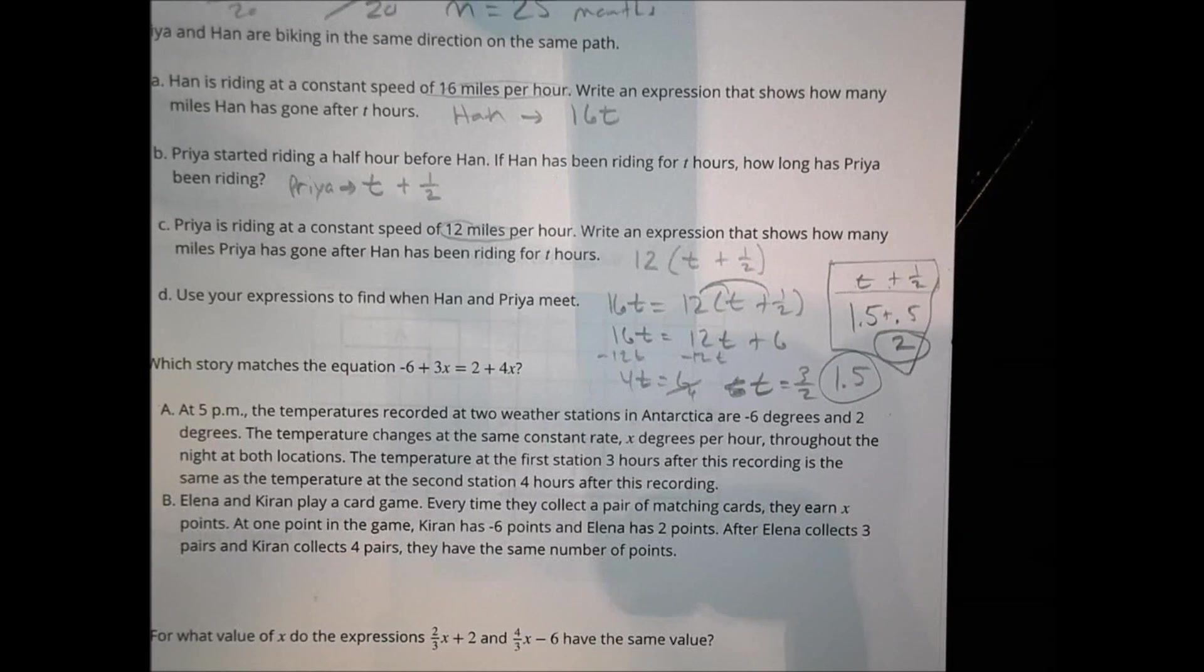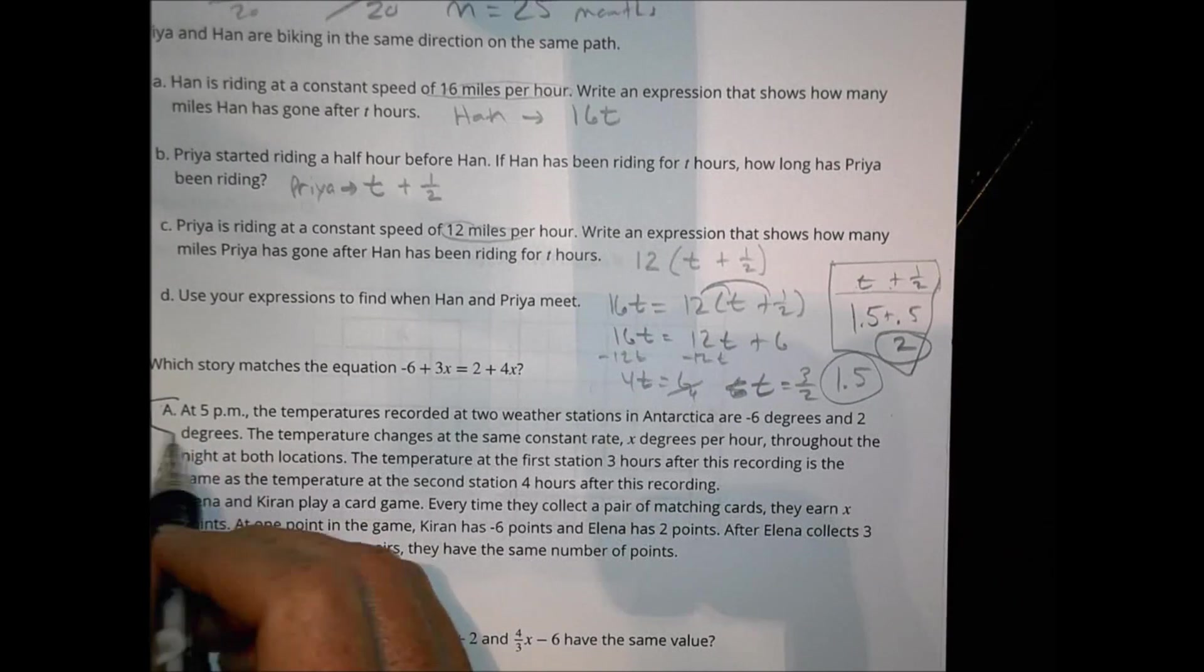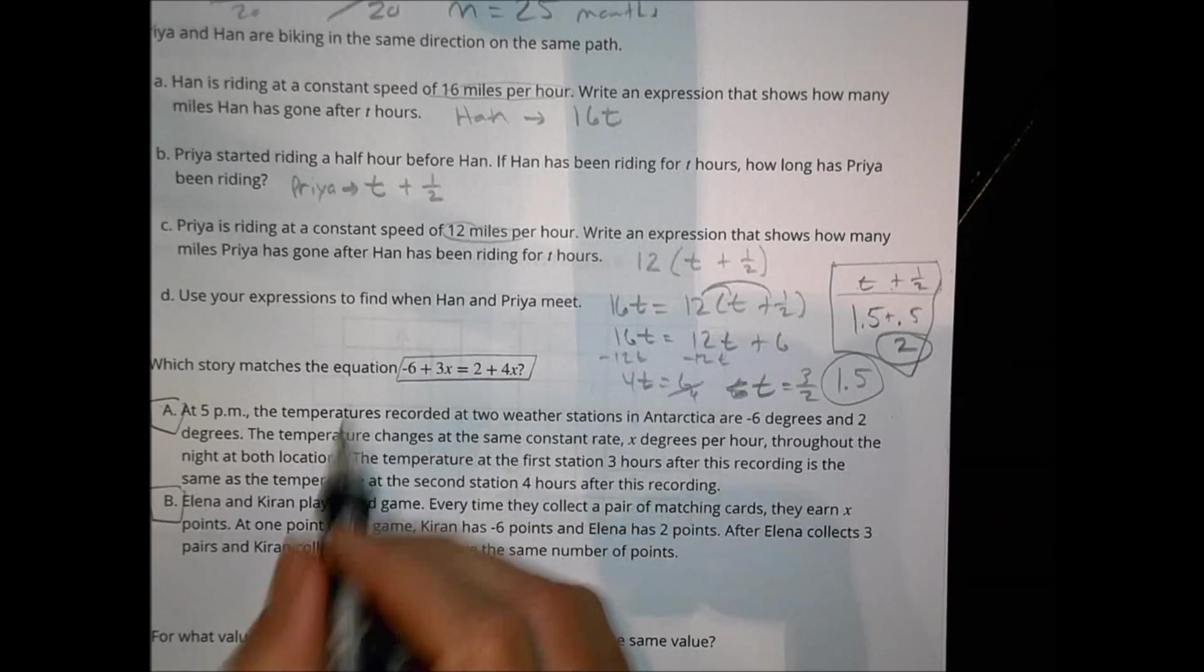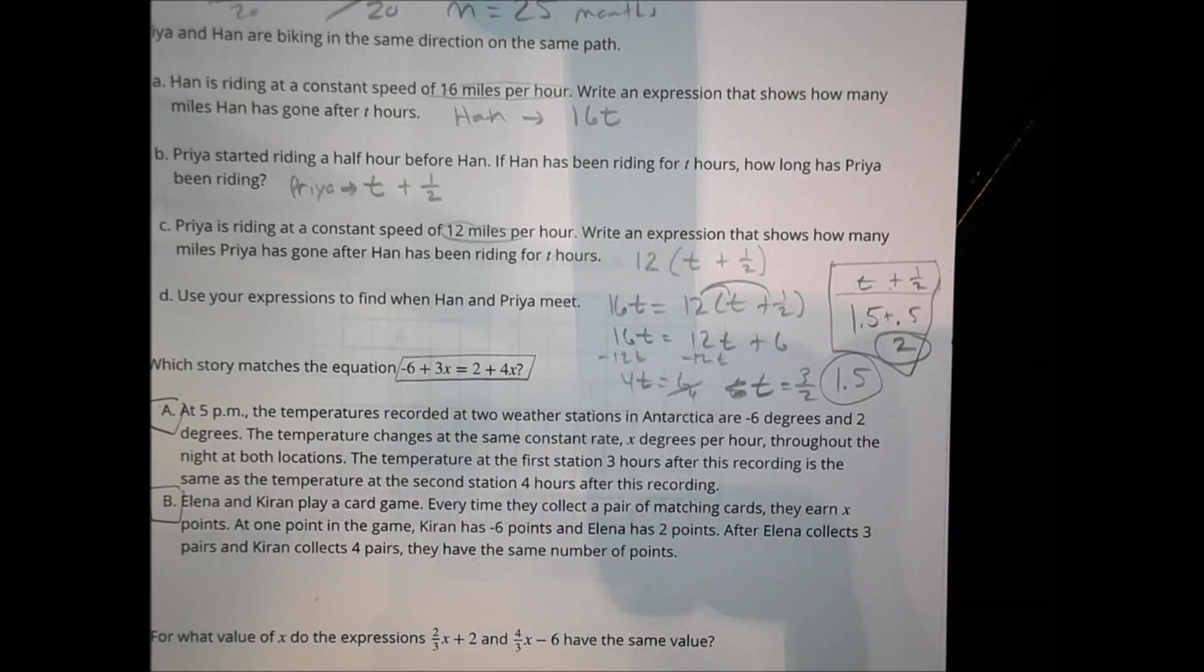Number 3. Which story matches the equation? Negative 6 plus 3x equals 2 plus 4x. I want you to just go ahead and read that one. I'm going to let you do that one on your own. You can read both of these stories and see which one matches that equation. Look at the words they use and see if you can solve that one there.